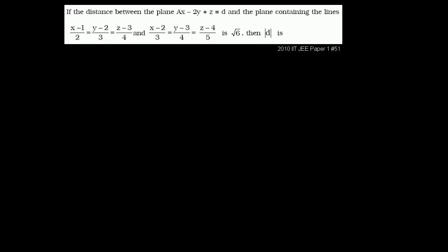Let's think about this. They're talking about the distance between this plane and some plane that contains these two lines. In order to talk realistically about distances between planes, those planes have to be parallel. Because if they're not parallel and they intersect each other, the distance is clearly 0. Since they tell us the distance is square root of 6, the planes must be parallel.